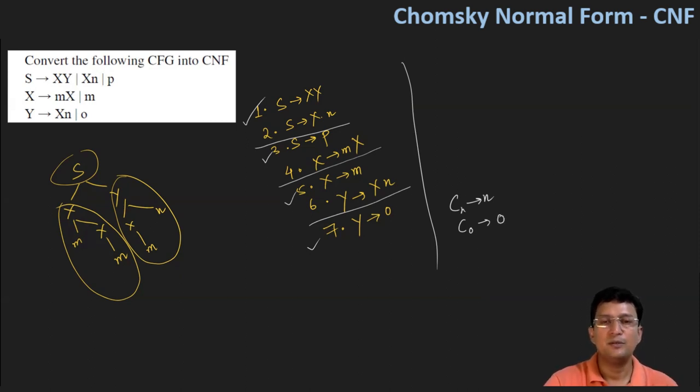So we create two new productions and use them. We will also need a Cm to convert production number 4. So Cm produces m.